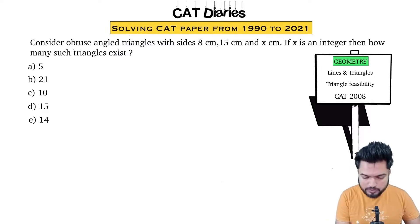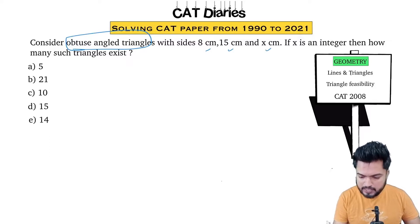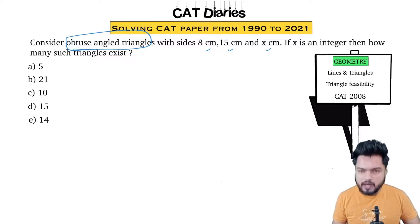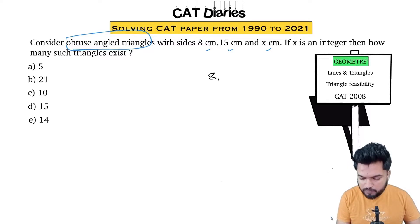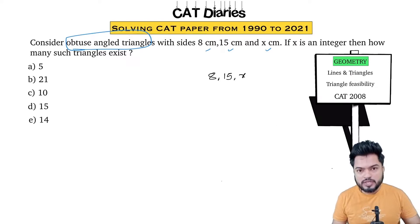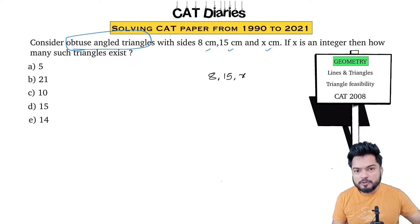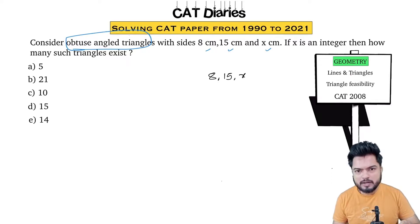Consider obtuse angle triangles with sides 8, 15, and X centimeter. If X is an integer, how many such triangles exist? There is a strong chance you might make a mistake if you don't read the word 'obtuse angle triangles.' They are not asking how many triangles can be formed with sides 8, 15, and X — they are asking: out of all triangles formable with sides 8, 15, and X (X integer), how many of them are obtuse angle triangles? I want obtuse — more than 90 degrees.